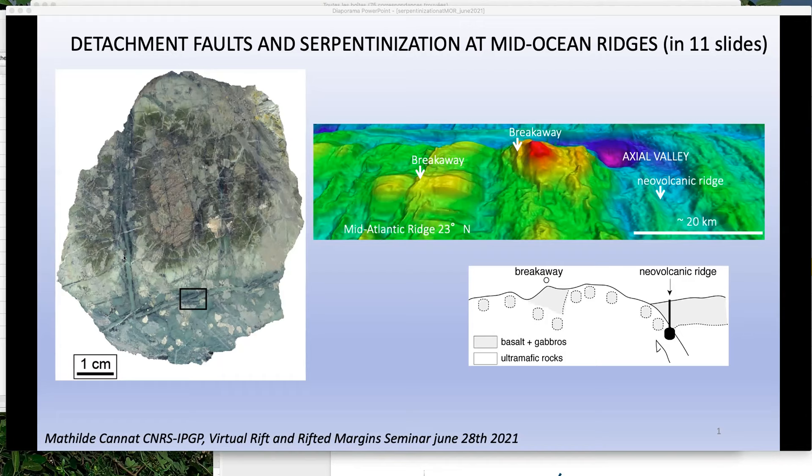Next to these veins you have halos of more extensively serpentinized peridotite. We believe this happens at several scales — at the centimeter or decimeter scale here, but probably also at a hectometric and kilometer scale. Here we have a 3D view of the Mid-Atlantic Ridge: the present-day axial valley has a volcanic ridge, so it's not an amagmatic setting.